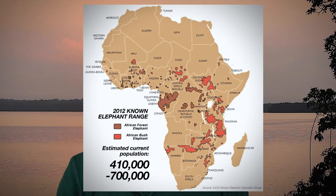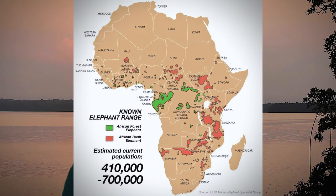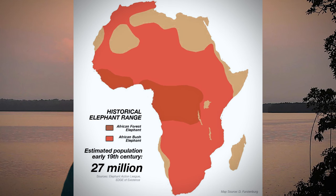Where do you find the African Elephant? Well, obviously Africa — mostly Sub-Saharan Africa. As you can see from this map here, there are two colours: the brown, being the forest elephant, and the red, being the savannah or bush elephant. The estimated current population is 410,000 to 700,000, down from 27 million at the start of the 19th century, mainly due to poaching for ivory tusks.